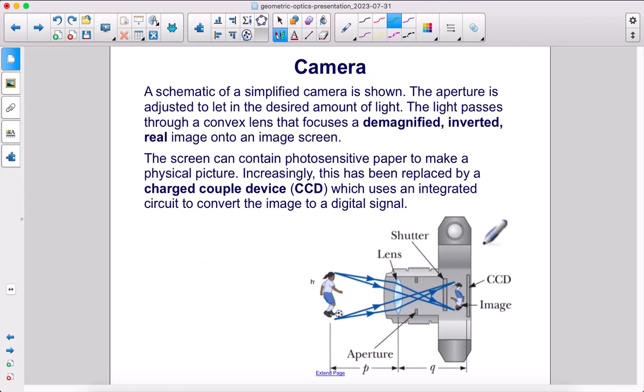Here is a camera. A schematic of a simplified camera is shown. The aperture is adjusted to let in the desired amount of light. The light passes through a convex lens that focuses a demagnified, inverted, real image onto an image screen. The screen can contain photosensitive paper to make a physical picture.